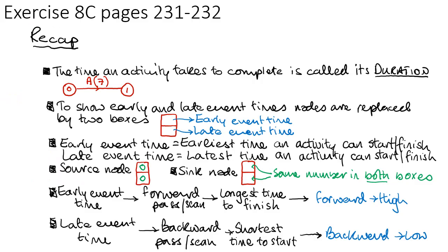You should now be able to do exercise 8c on pages 231 to 232. Just remember: forward high, backward low.